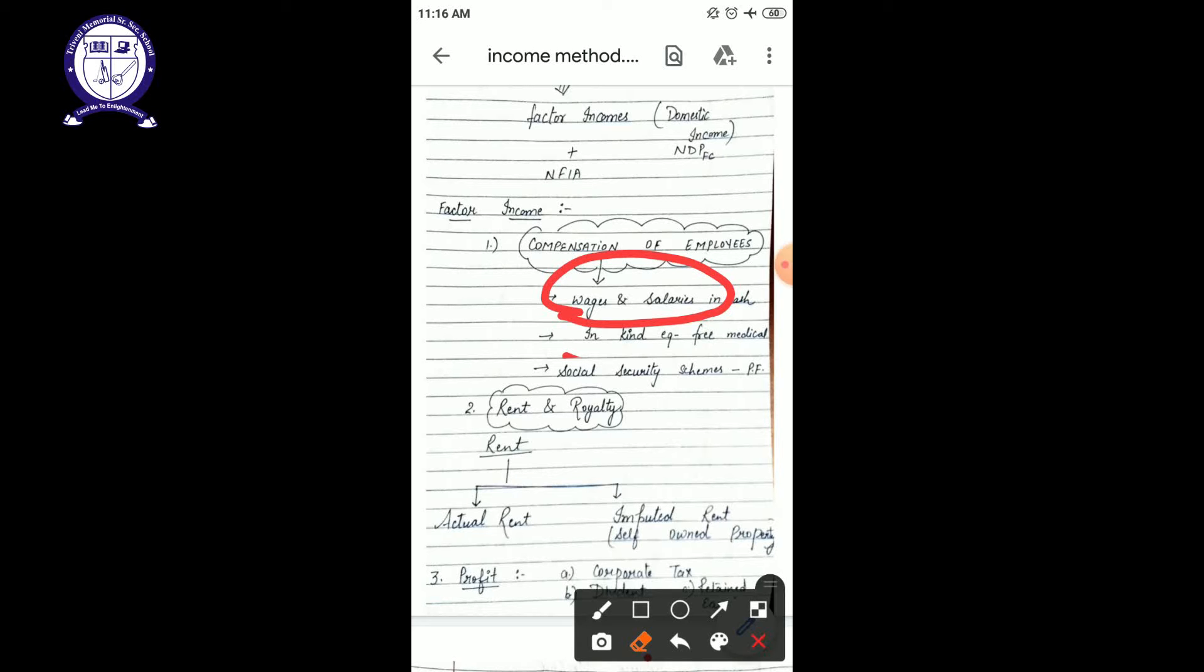Moving towards your next point, that is your second component of your factor income. Second component is rent and royalty. In rent and royalty, first one is your rent.